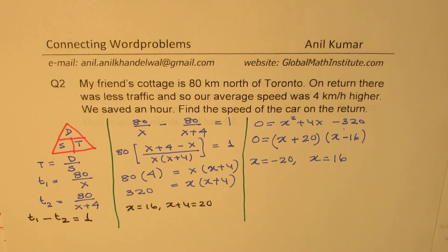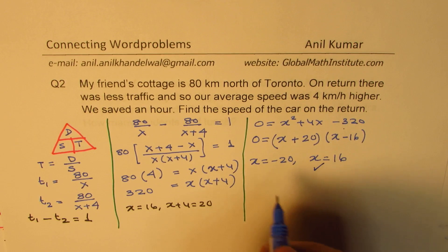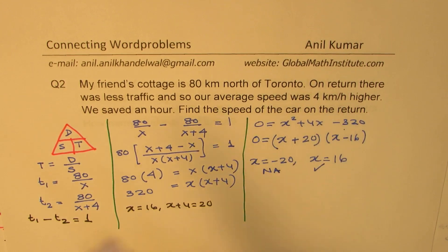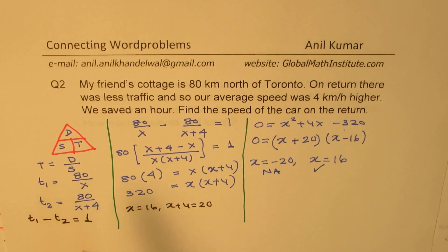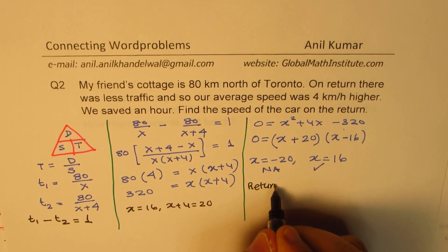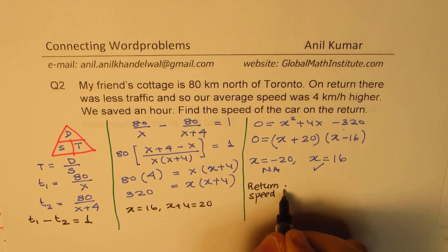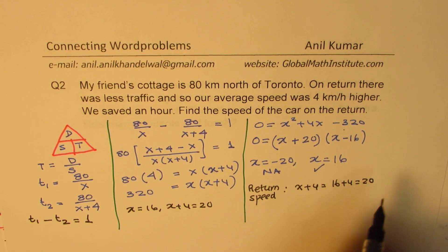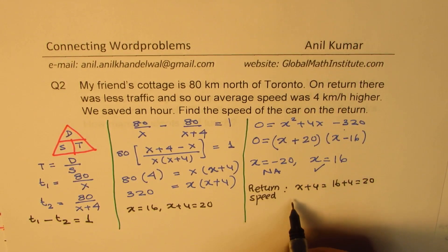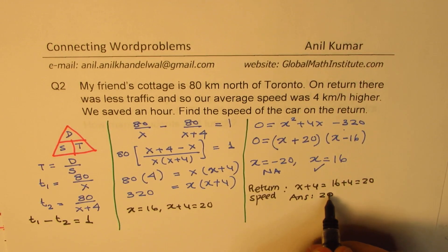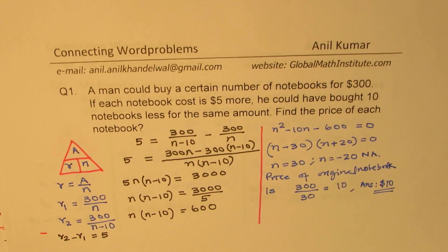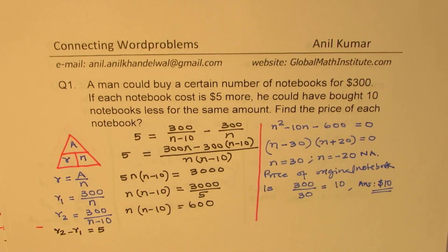Since distance, speed and time must be positive, X = 16 is our answer. The speed of the car on return is X+4 = 20 kilometers per hour. I hope you understand and appreciate how similar these two questions were — we followed exactly the same pattern to solve this question.